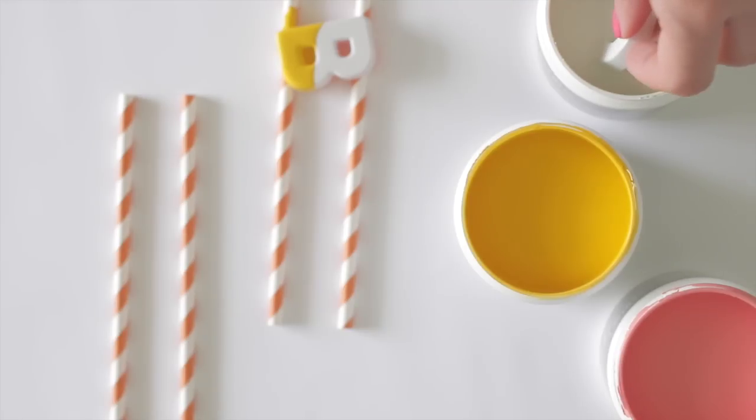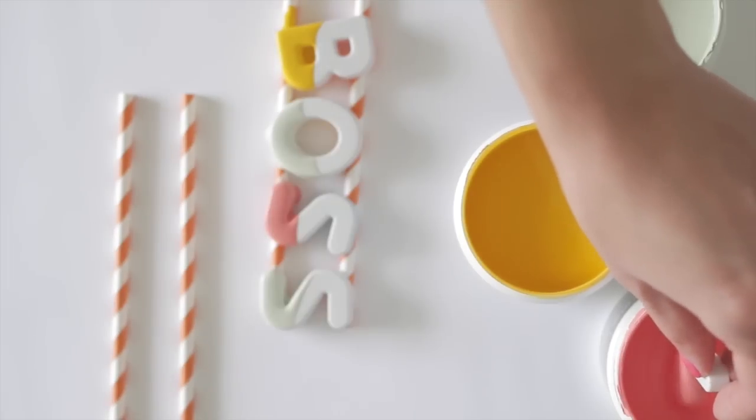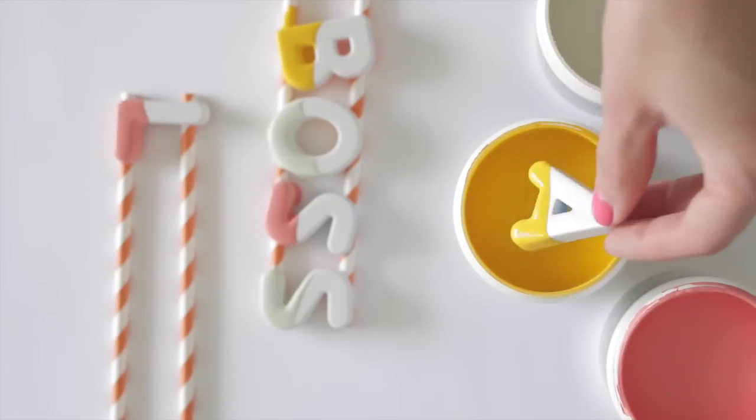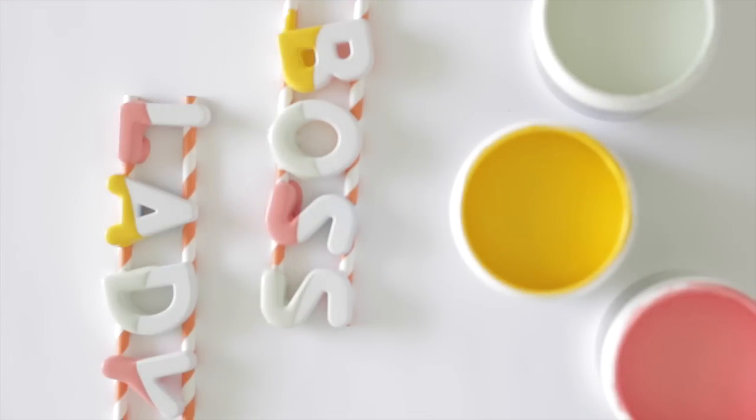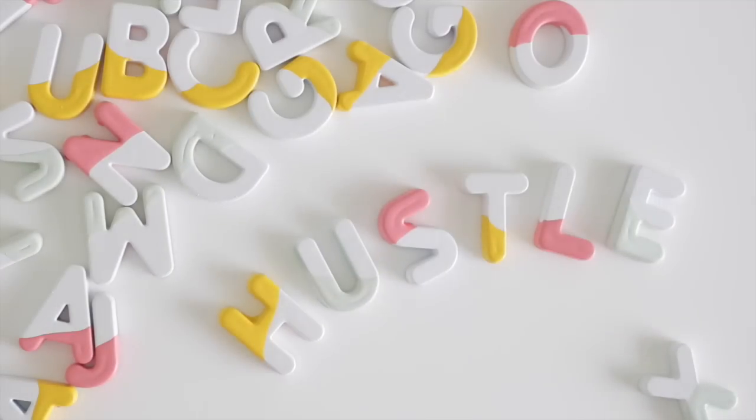Repeat this with the other letters. Allow them to dry for about 10 minutes, then place them on new straws or popsicle sticks to completely dry. This will help the paint drip and avoid excess puddles. Once they are fully dry, they're ready to be used.